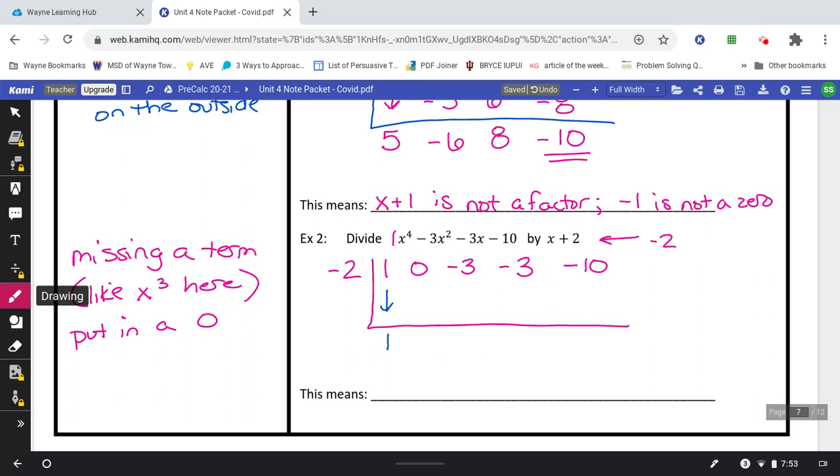Bring down 1. So whatever first number, drop it straight down. Then you alternate between multiplying and adding. Multiply negative 2 times 1, negative 2. Add those to make negative 2. Multiply to make 4, add to get 1. Multiply the negative 2 on the outside by that 1 to make negative 2. Add negative 5, multiply to make positive 10, and add together to make 0.